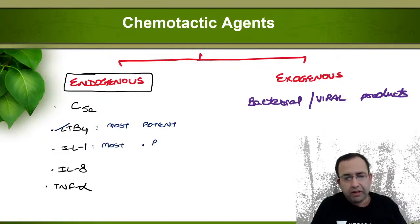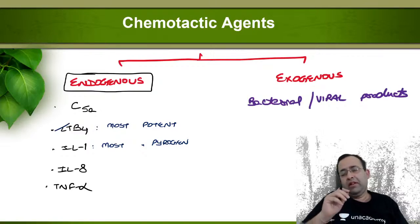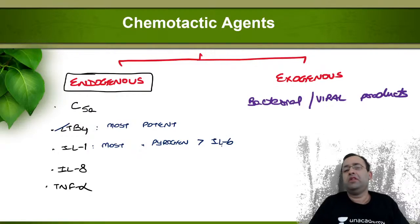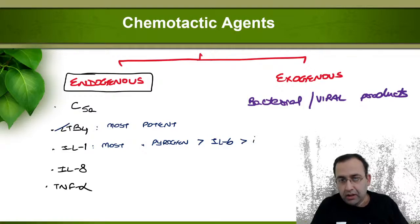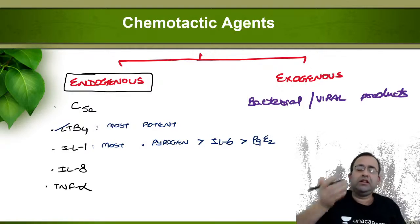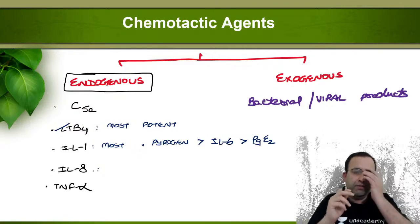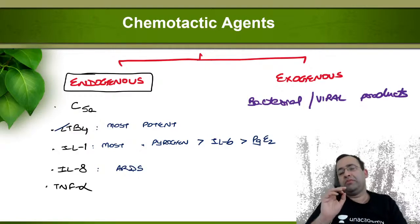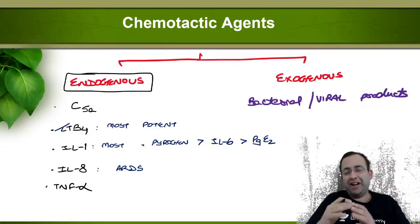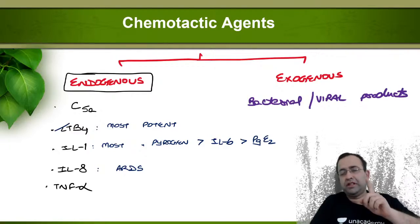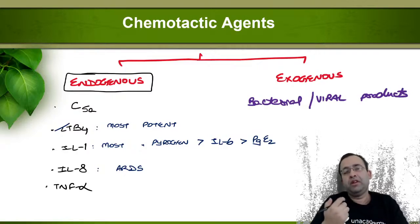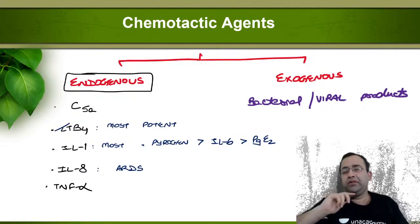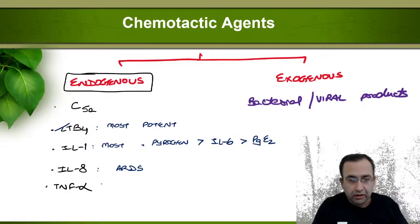Interleukin-1 is the most potent pyrogen — it causes fever. The second most potent pyrogen is interleukin-6, followed by prostaglandin E2 — this was last year's NEET PG question. Interleukin-8 is responsible for development of ARDS (acute respiratory distress syndrome). In non-COVID ARDS, the main cytokine is IL-8. What is the main cytokine in COVID-19 induced ARDS?